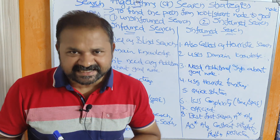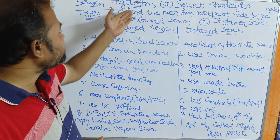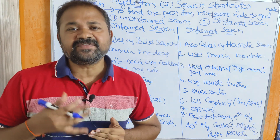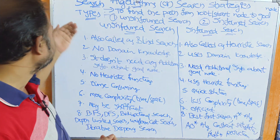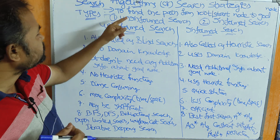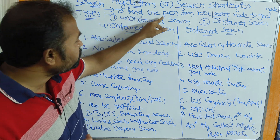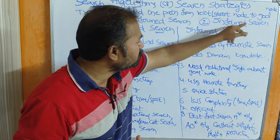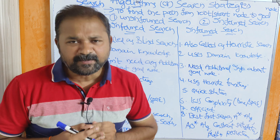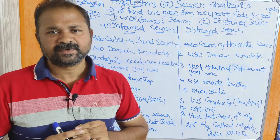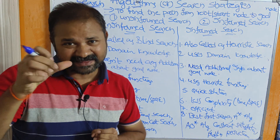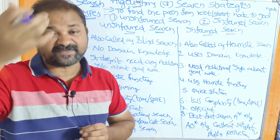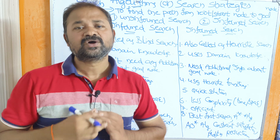Let us discuss search algorithms or search strategies in artificial intelligence. Search algorithms are mainly useful in order to find the path from the root or starting node to the goal node — that is, from the first node to the goal node.